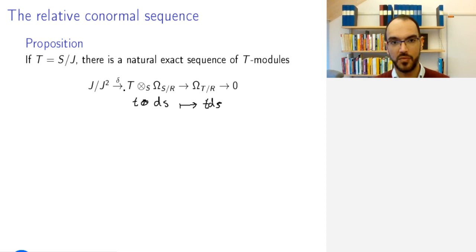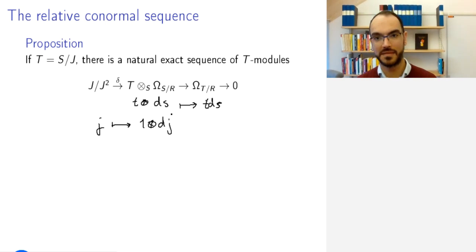But now we look to the left, to this quotient, we have the map delta, and the map delta relates an element J to 1 tensor dj. J is an ideal of S, so you can show that this is well-defined and makes this into an exact sequence.